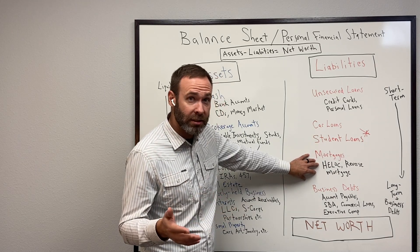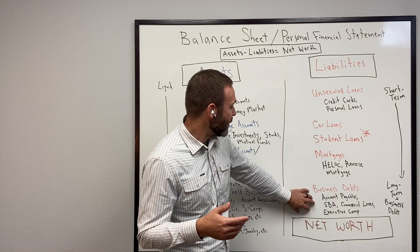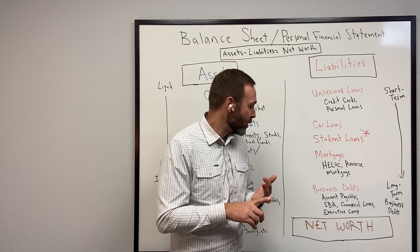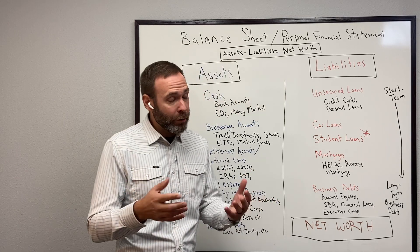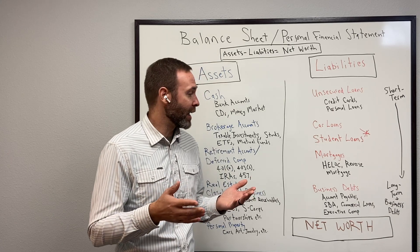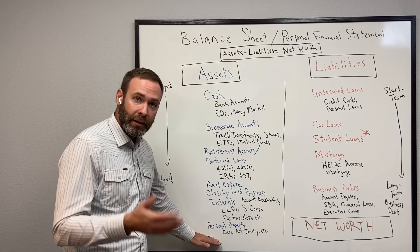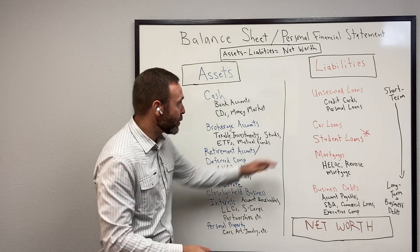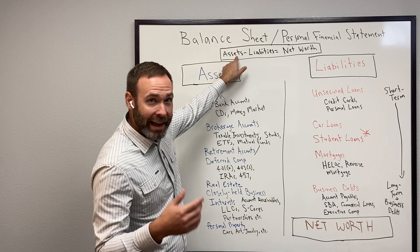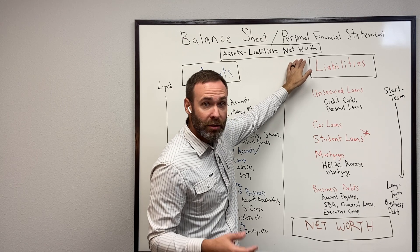Next would be mortgages — debts that are backed by assets. And then finally would be your business debt: account payables, any commercial loans that you have, and if you want to get granular, even executive compensation plans that aren't funded. You add all of the liabilities up into one aggregate number, and then you take aggregate assets minus aggregate liabilities to get your net worth.